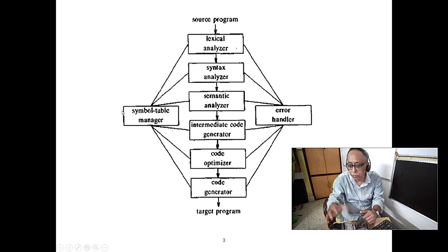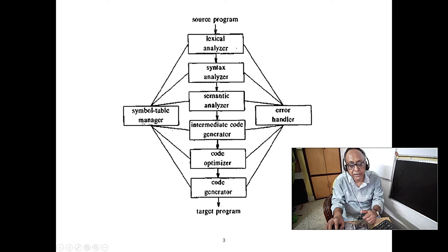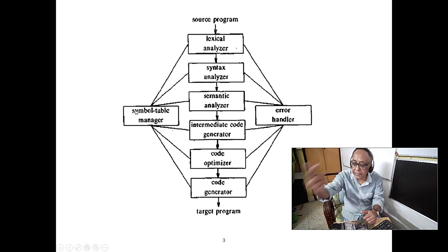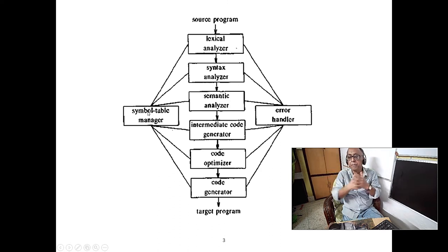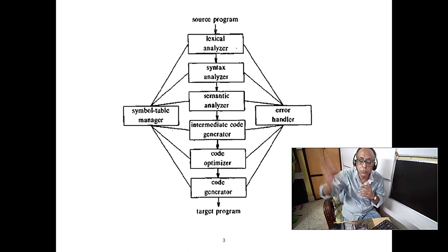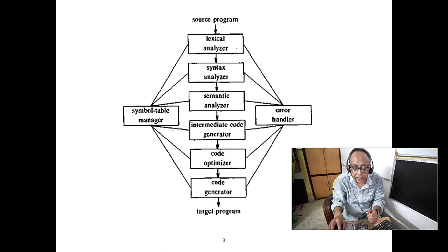The symbol table is basically a dictionary — if you know Python, you can understand a dictionary. It maps variable names to automatically generated index numbers — tokens. Whenever you go to a bank, you get a token. The same token generation happens here. At this stage, the program consists of tokens only.